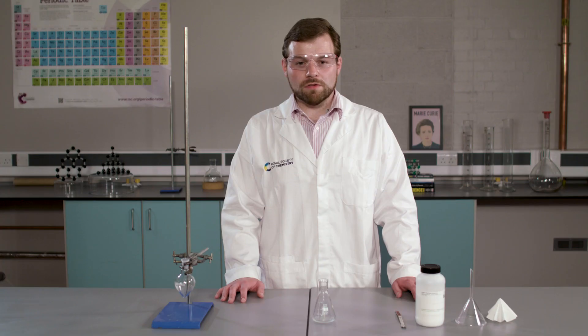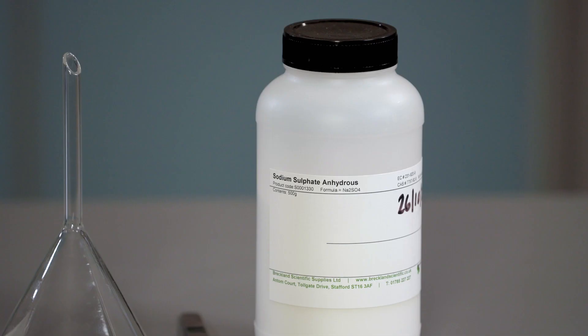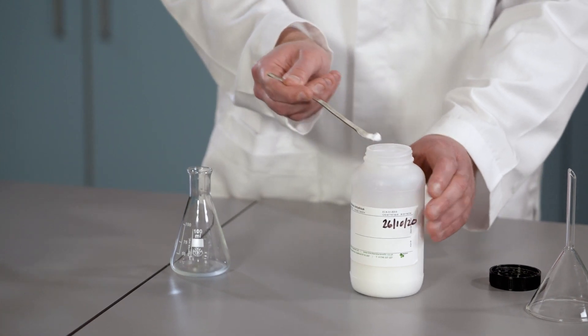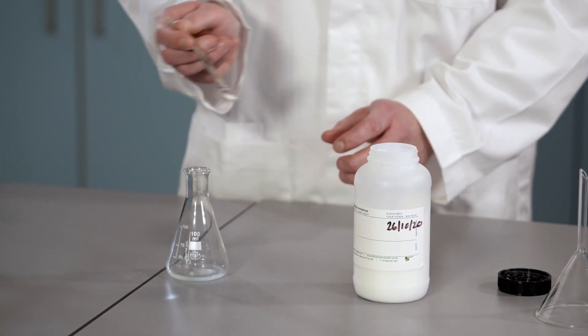We now need to remove the trace amounts of water from our organic liquid. To do this, I'm going to add anhydrous sodium sulphate. The anhydrous sodium sulphate is a drying agent and will form a complex with any water that remains in the liquid. I'm going to add it by the half spatula full and swirl each time.